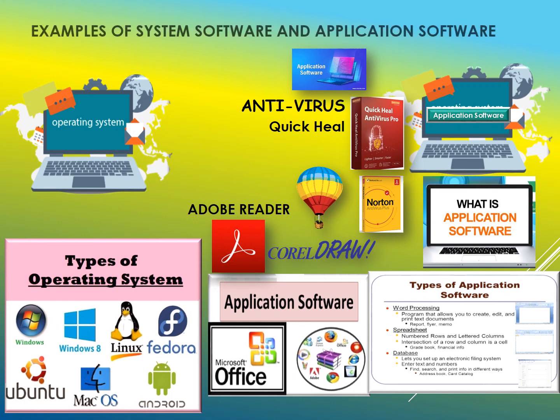Let us see some examples of system software and application software. System software consists of the operating system and utility software. Types of operating systems are Windows, Linux, and Ubuntu. Utility software includes antivirus programs such as Quick Heal and Norton. Application software includes MS Office, which consists of Word, Excel, PowerPoint, and Access.